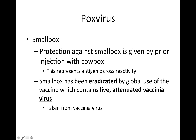Protection against smallpox is given by prior injection with cowpox, and this represents antigenic cross-reactivity. Smallpox has been eradicated by global use of the vaccine, which contains live attenuated vaccinavirus — the vaccine was created through the vaccinavirus, which is part of the pox virus group.